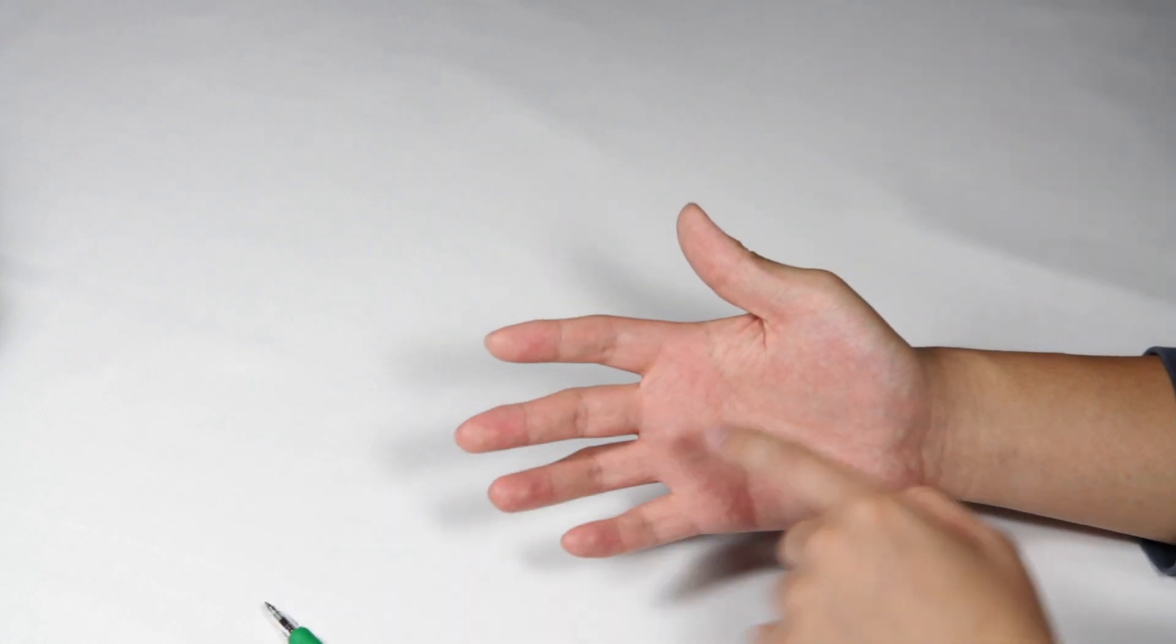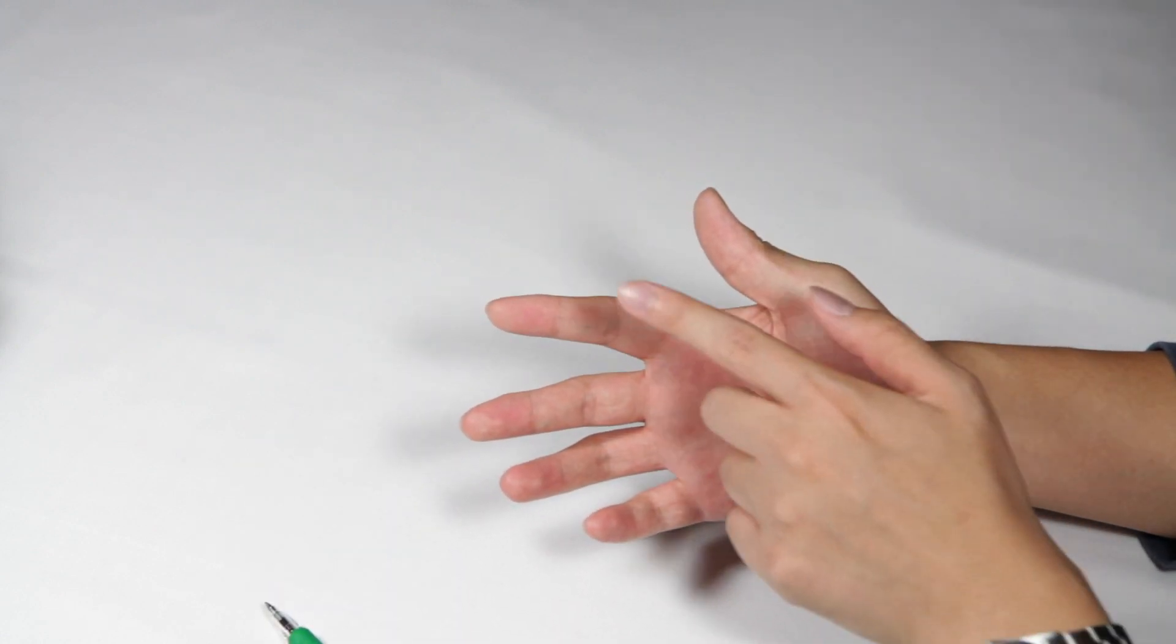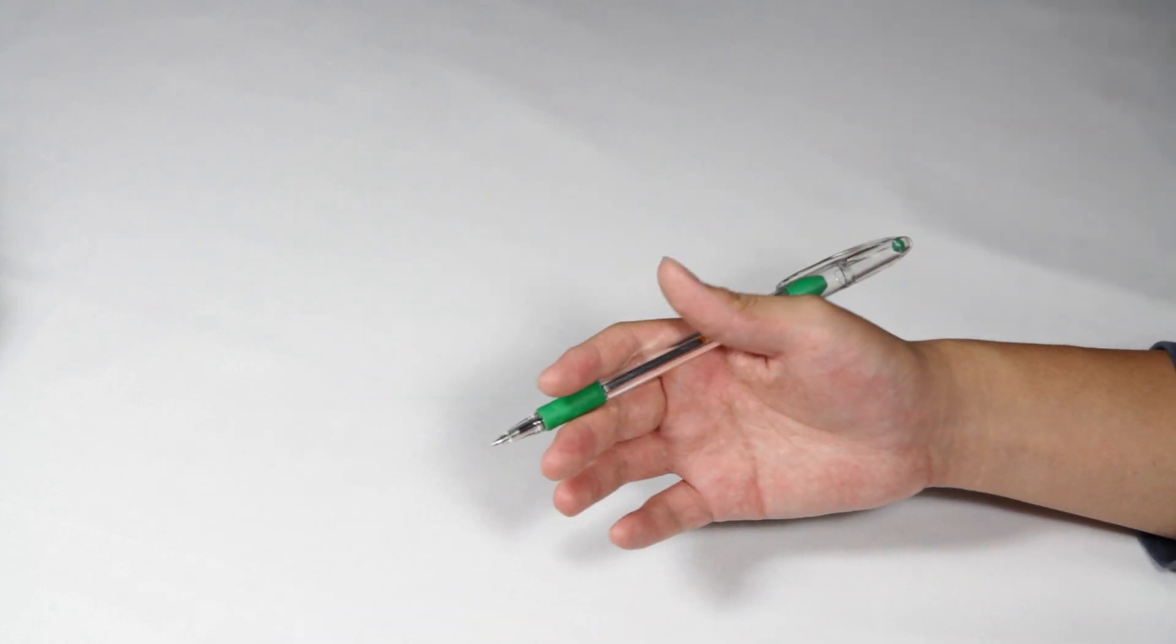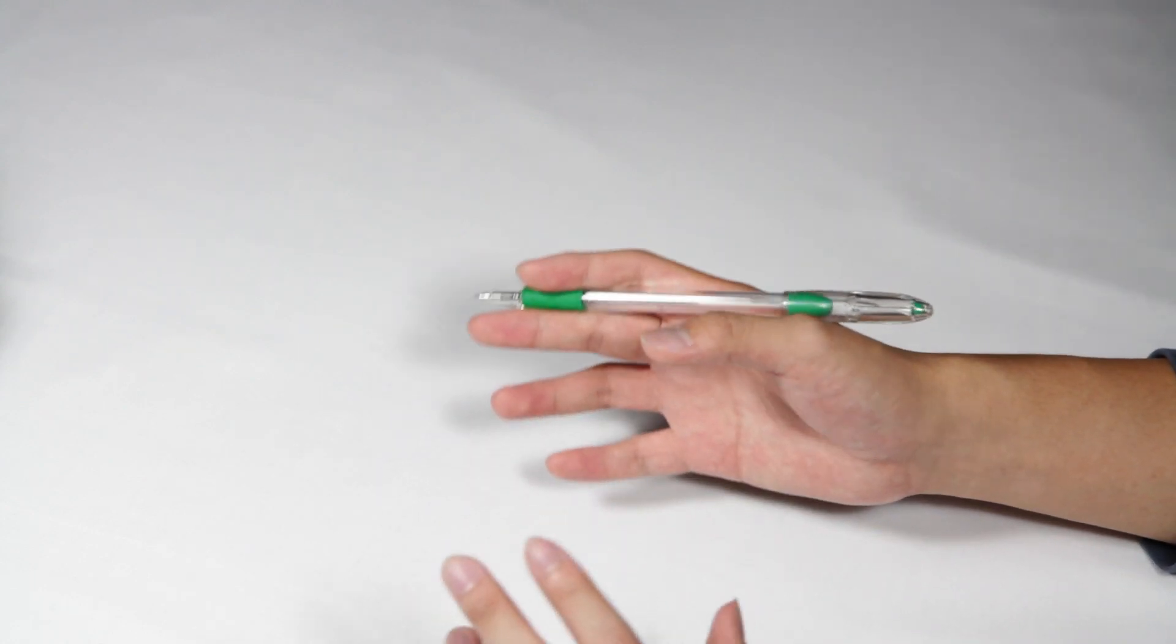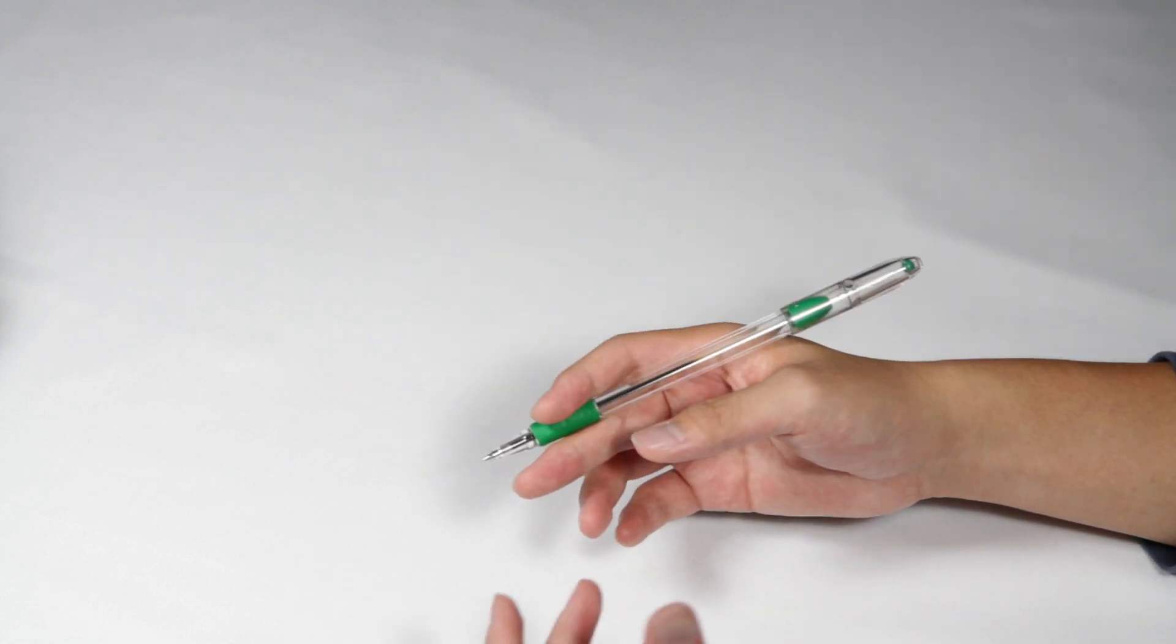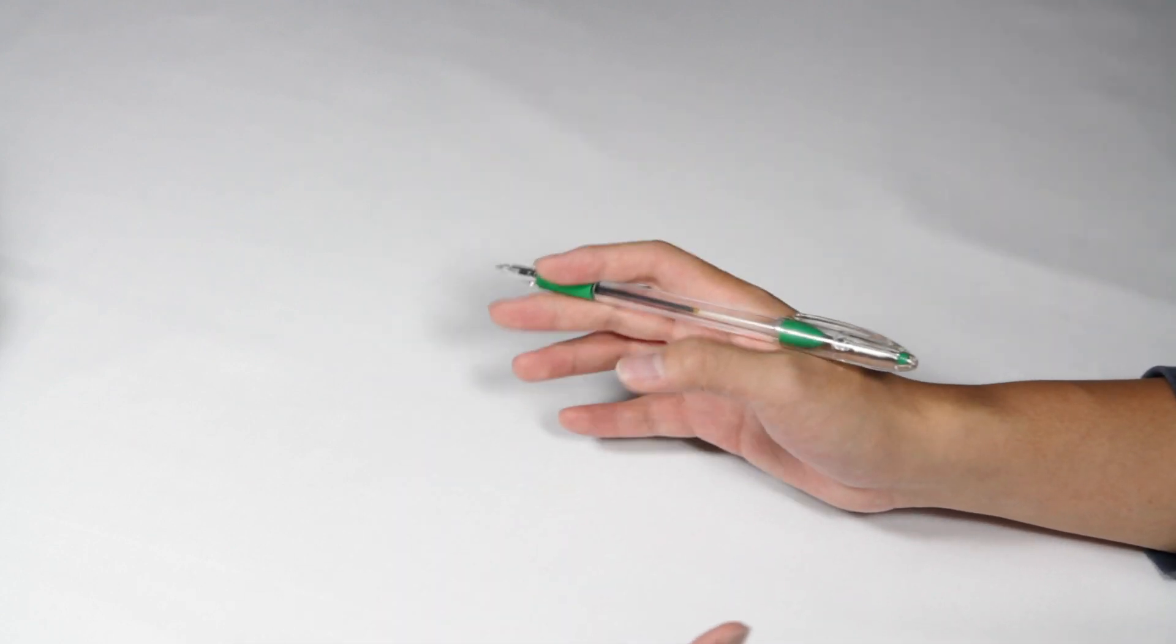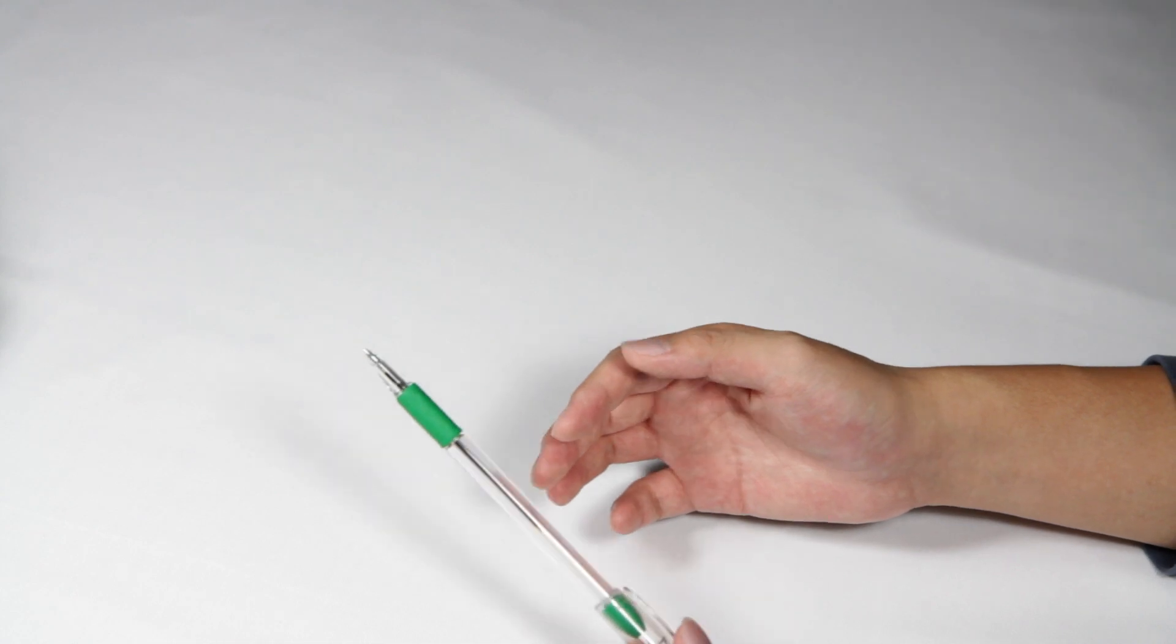So we're going to be going over the three main arounds aside from the thumb around: the index, middle, and ring around. Because I'm doing all three in one video instead of individual videos for each one, I'm not going to be showing each of them at the beginning, but I'm going to be showing the trick and the slow-mo as I go along in the video, and then I'll put all the slow-mo again at the end.